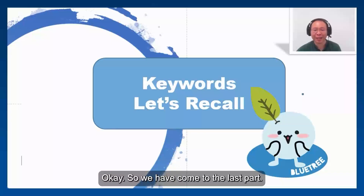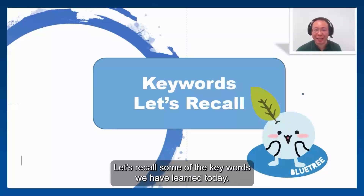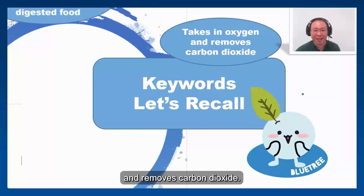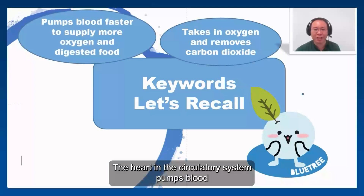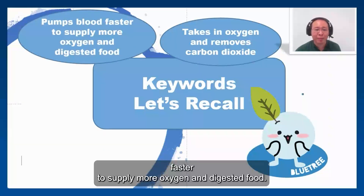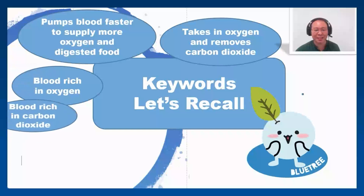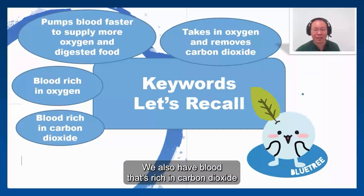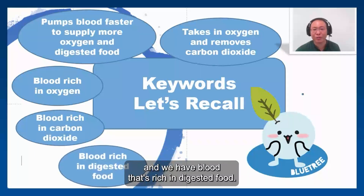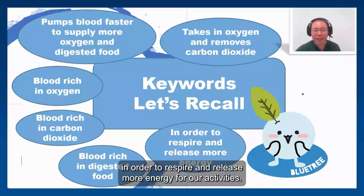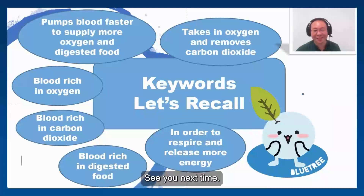Let's recall some of the keywords we have learned today. The lungs in the respiratory system take in oxygen and remove carbon dioxide. The heart in the circulatory system pumps blood faster to supply more oxygen and digested food. We also have blood that is rich in oxygen, blood that is rich in carbon dioxide, and blood that is rich in digested food. Our body does this in order to respire and release more energy for our activities.